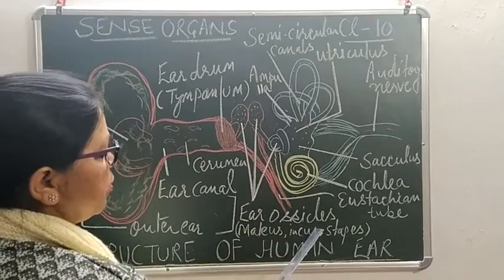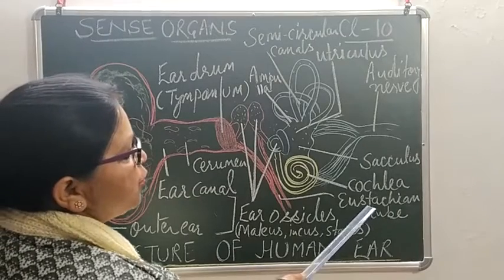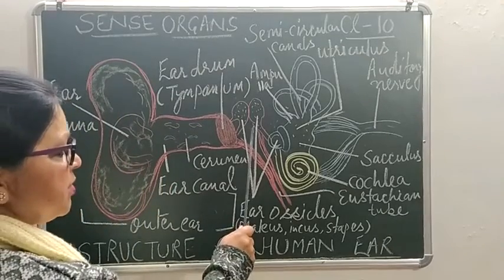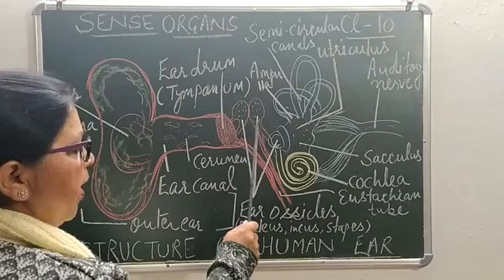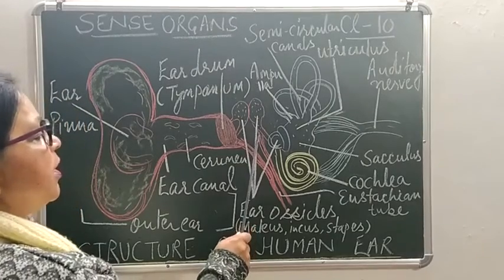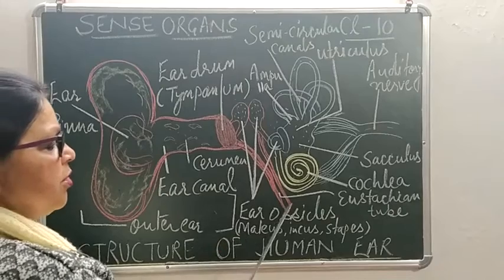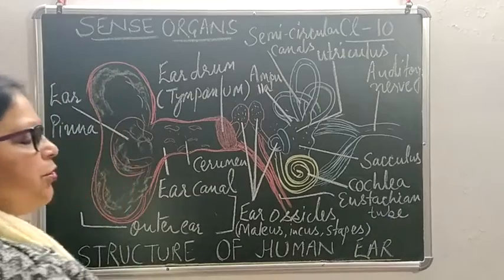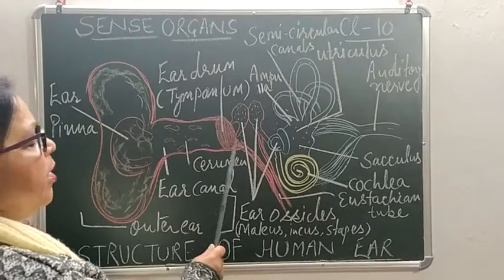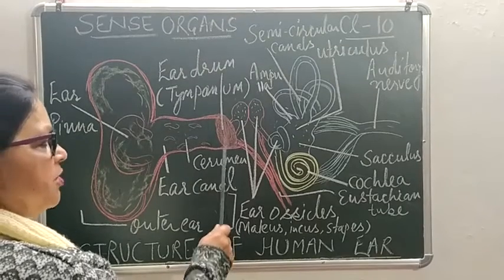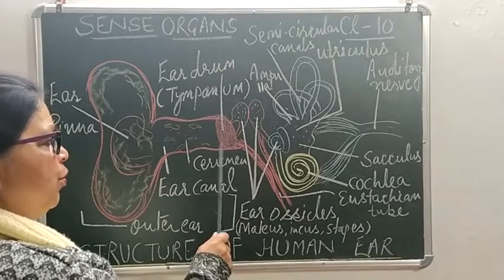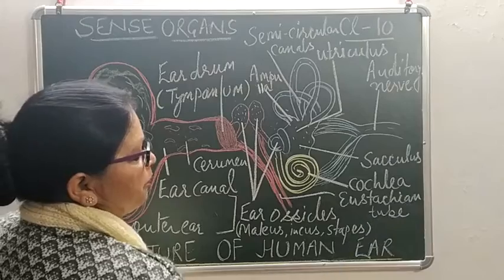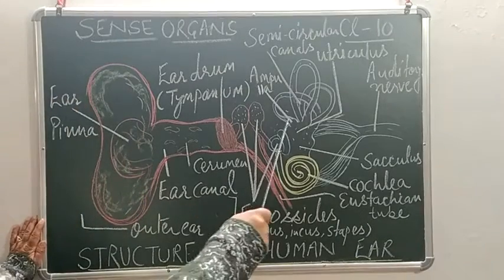Besides this, there is a tube called the eustachian tube. The eustachian tube is a part of the middle ear and it connects the middle ear to the throat — it opens into the throat. The function of the eustachian tube is to equalize the air pressure on both sides of the tympanum.